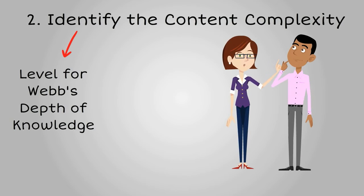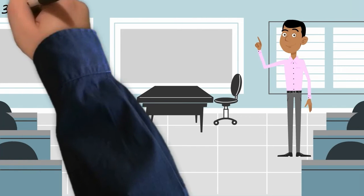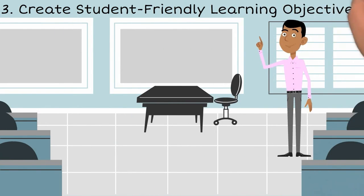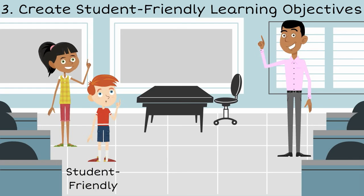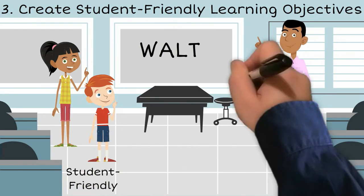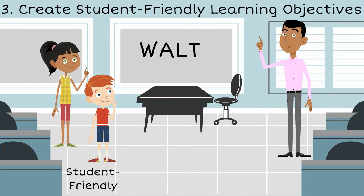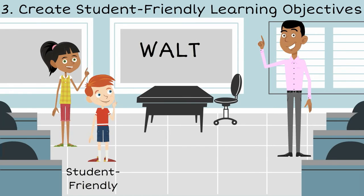This step results in consensus regarding expectations of student learning and allows for deeper understanding. The third step is to create student-friendly learning objectives based on specific standards. The use of student-friendly language is important. Learning objectives are framed using the term WALT, which means we are learning to, or we are learning that.